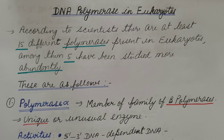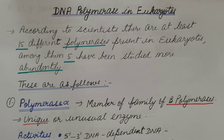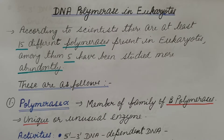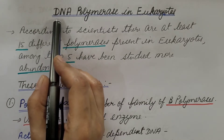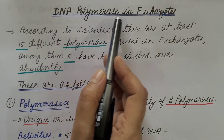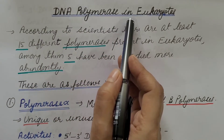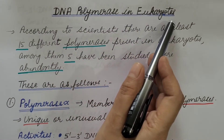Hello friends. In the last video, we discussed about types of DNA polymerases in prokaryotes — you can refer to that video, the link is given in the description box. Today we are going to discuss about DNA polymerases in eukaryotes.